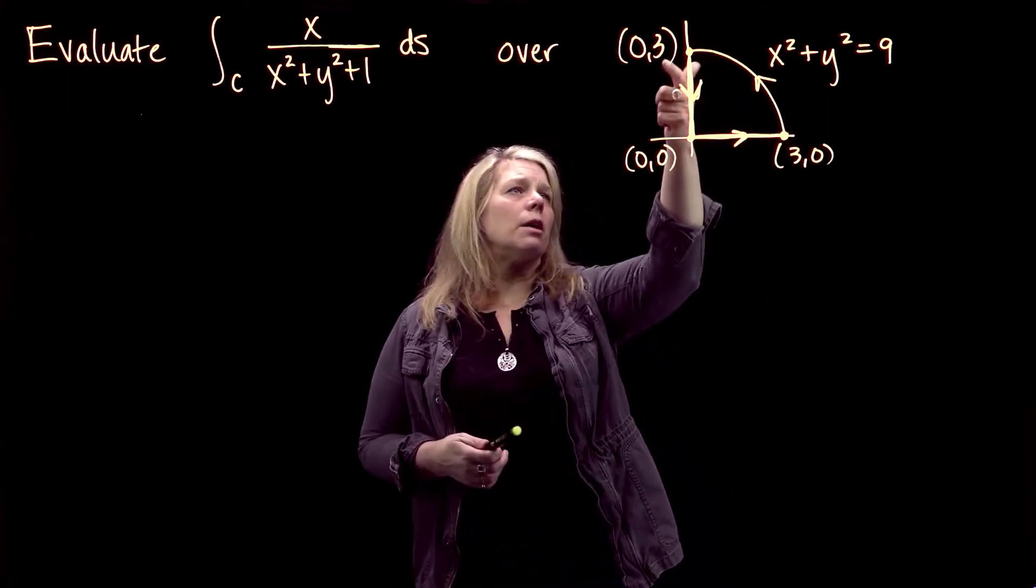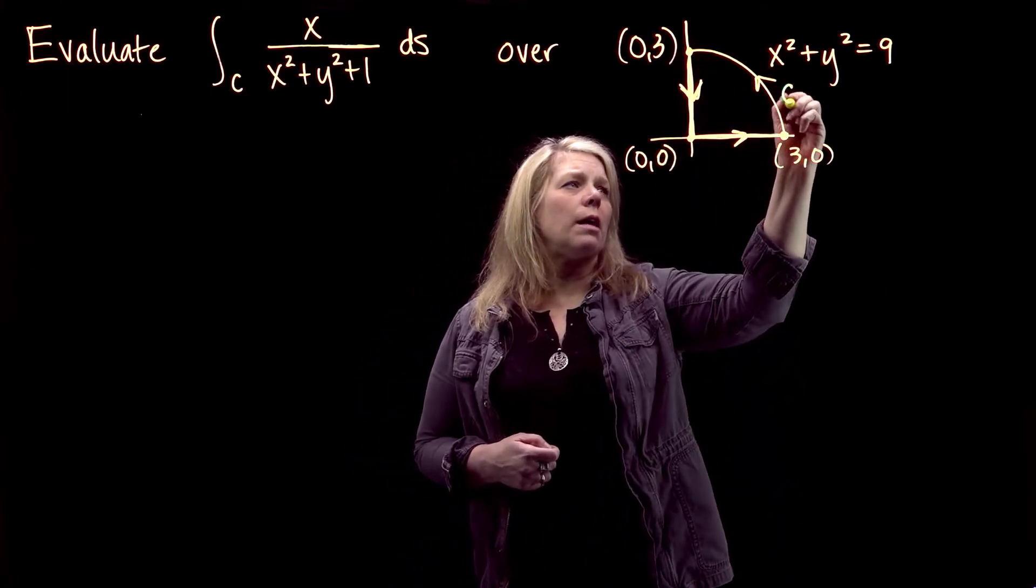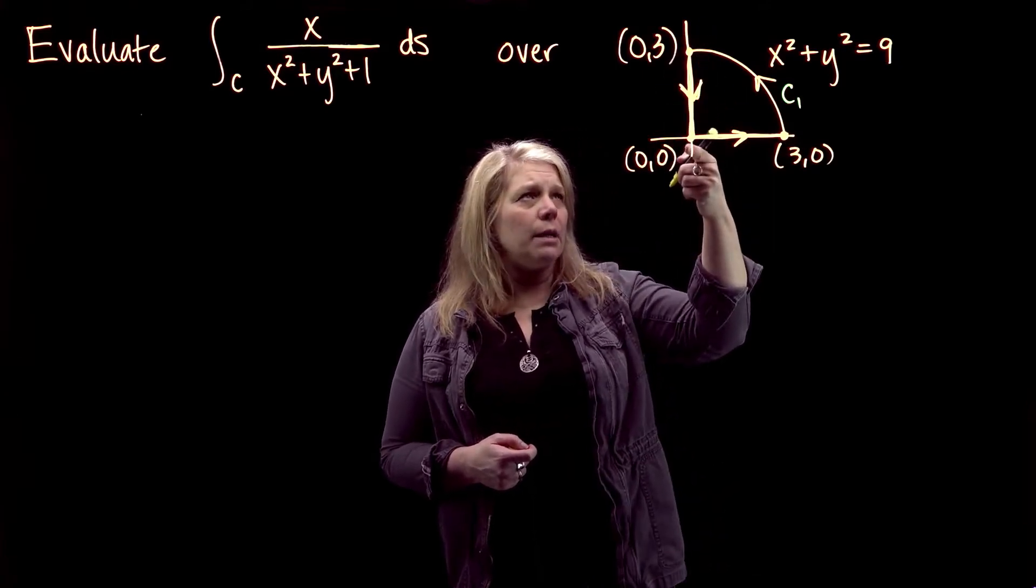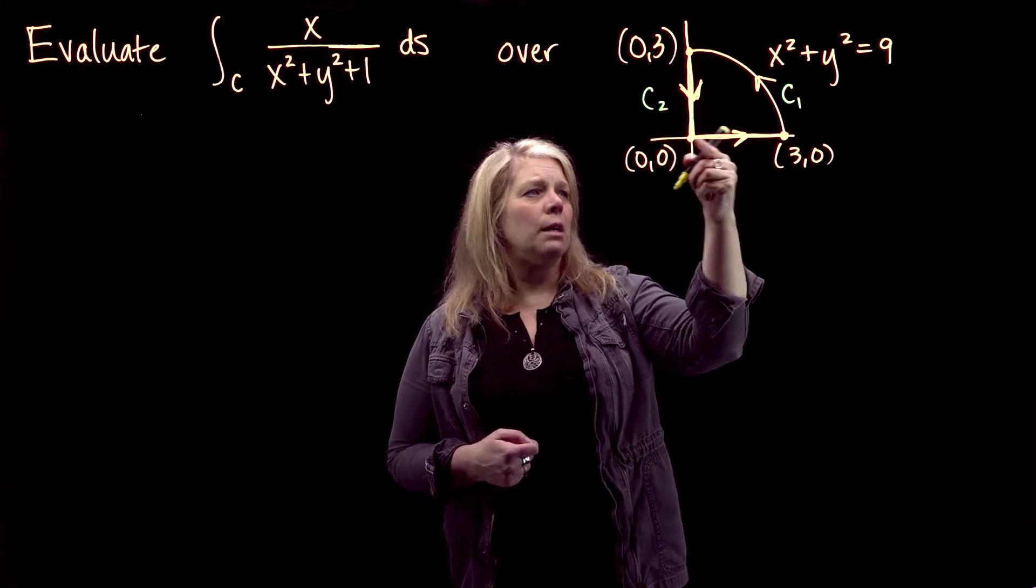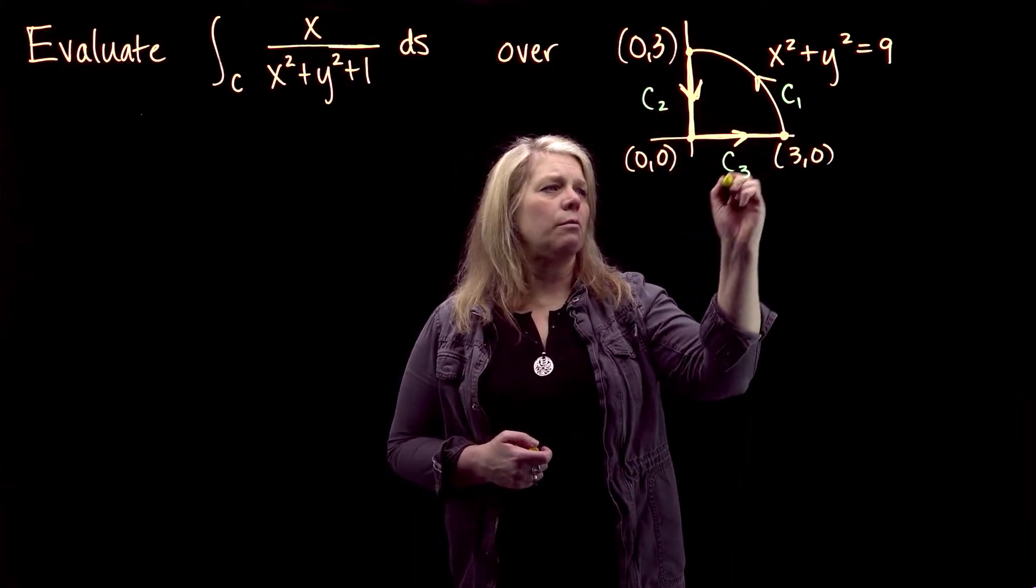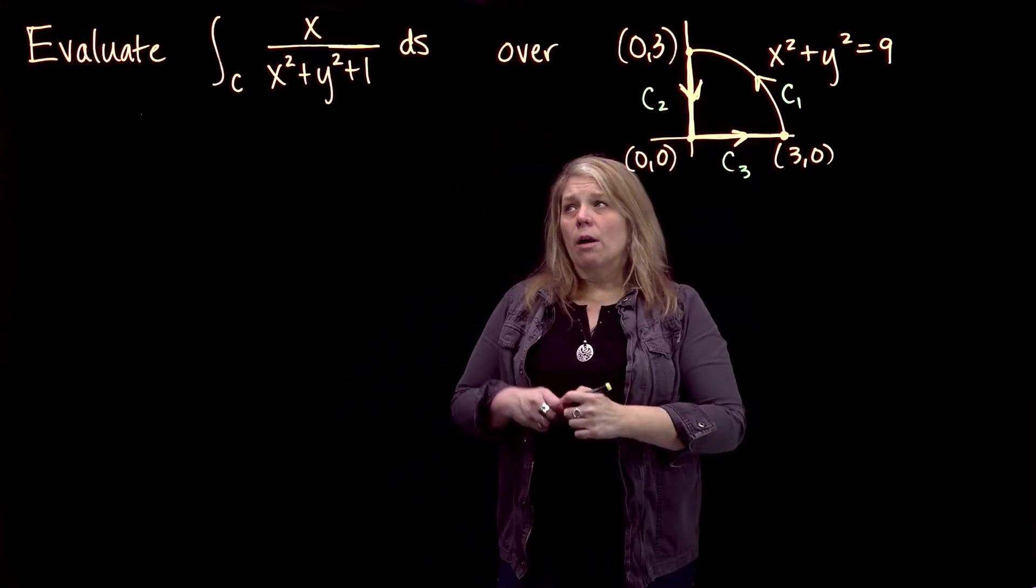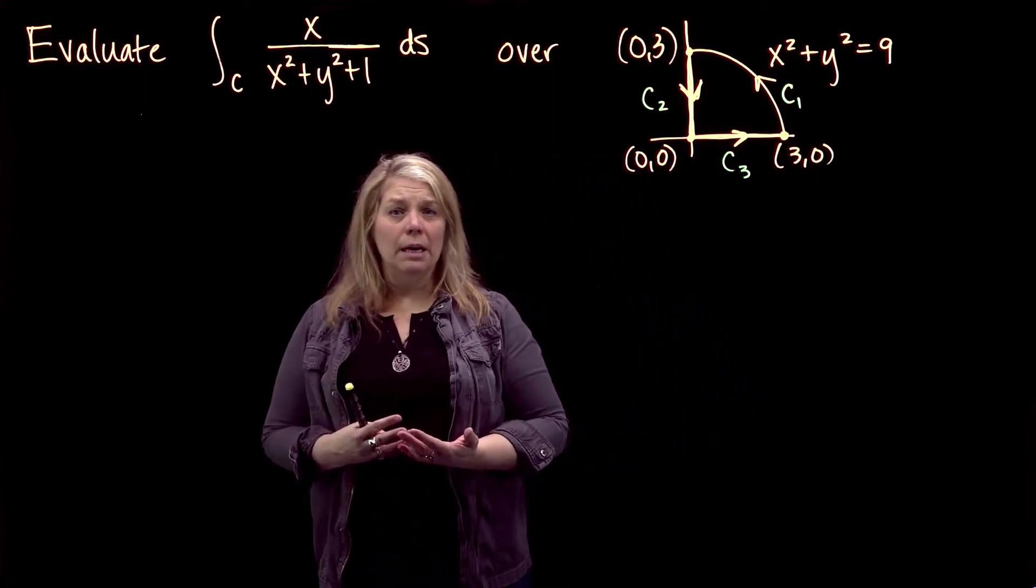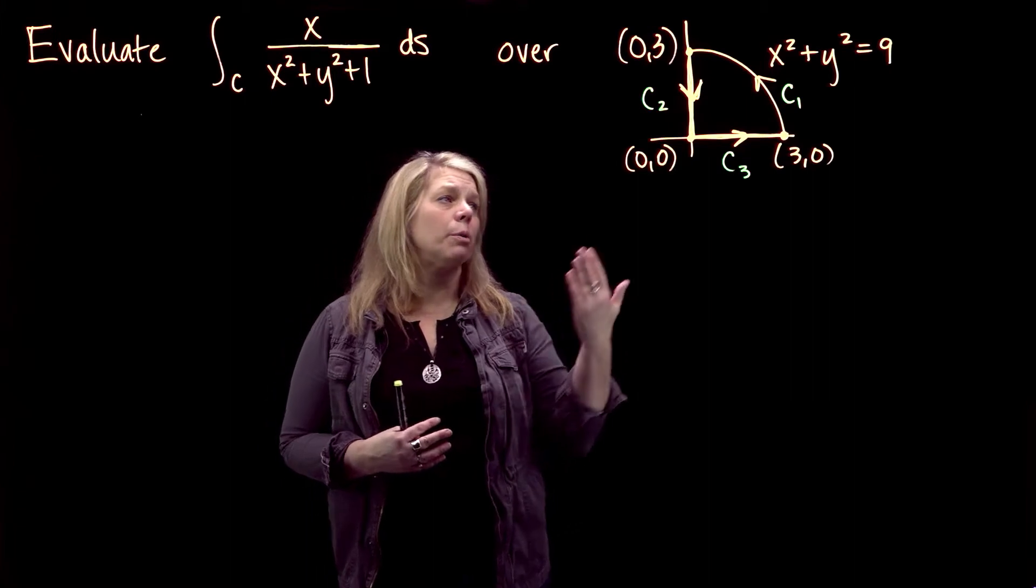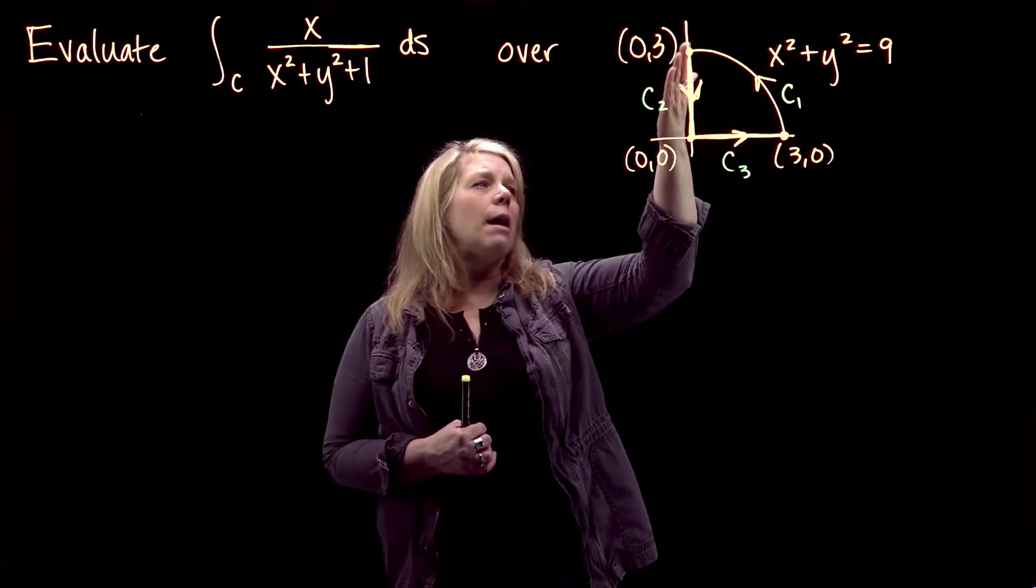I'm going to start with the arc of the circle, so I'm going to call that one C1. This line segment going from (0,3) to (0,0) would be C2, and this last part here would be C3. I'm going to have to split this into three separate problems. The other thing that I'm going to need for each of my problems is a parametrization of that part of the curve.